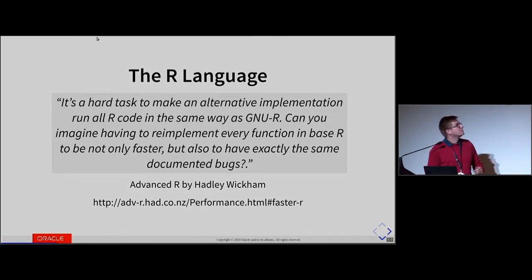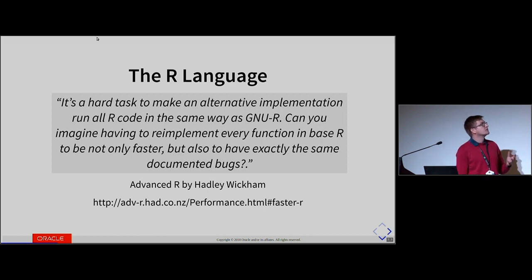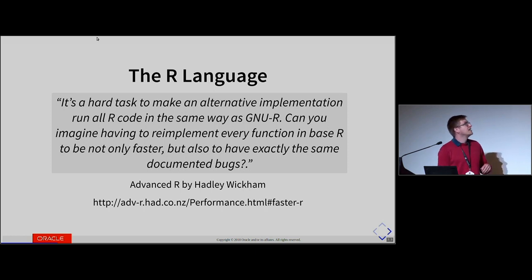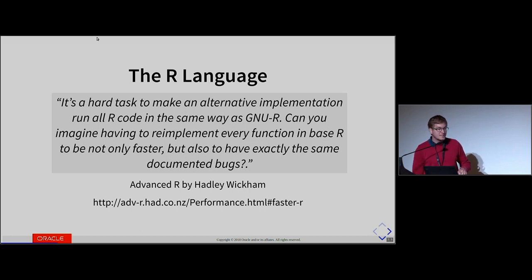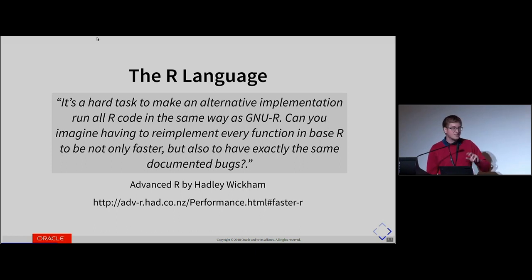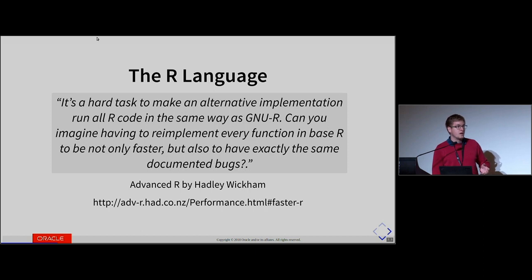In the words of Hadley, it's hard to make an alternative implementation run all R code in the same way as GnuR. Can you imagine having to reimplement every function in base R to be not only faster but also to have exactly the same documented bugs? And I'll add to it that not only documented bugs but undocumented bugs or features — it depends on your point of view. If the thing is not documented, we don't know if it's a bug or a feature. Certain packages use it and we just have to implement it as well to be compatible.